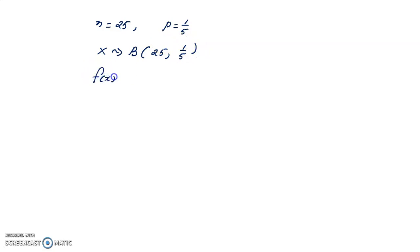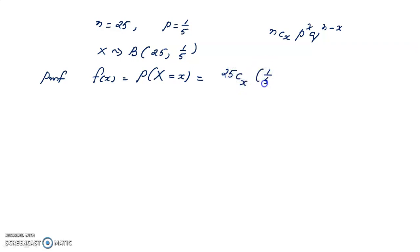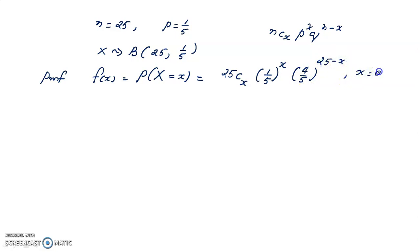The PMF of this binomial distribution is P(X = x) = 25Cx · (1/5)^x · (4/5)^(25−x), for x = 0, 1, 2, 3, … up to 25.